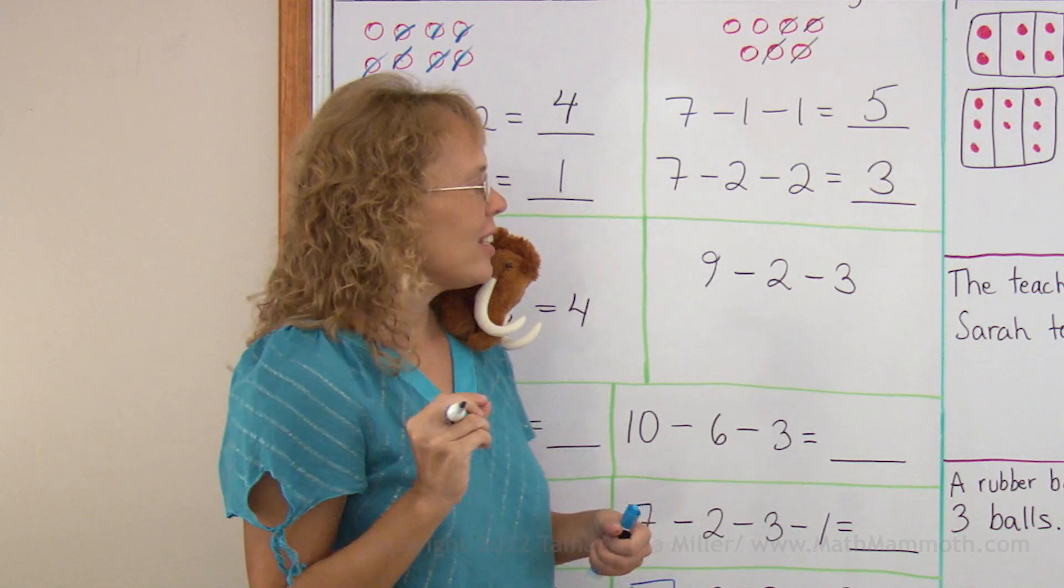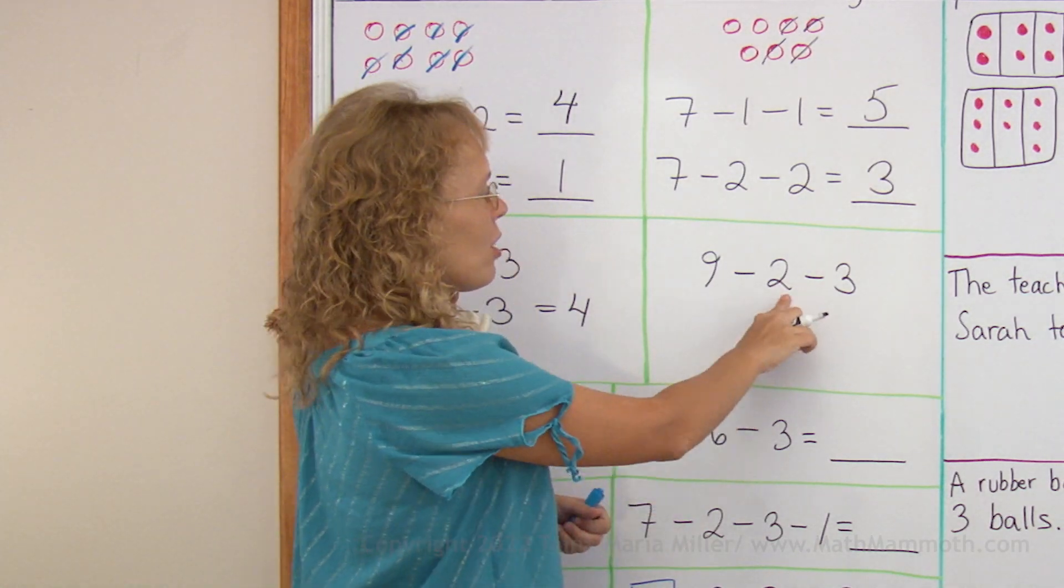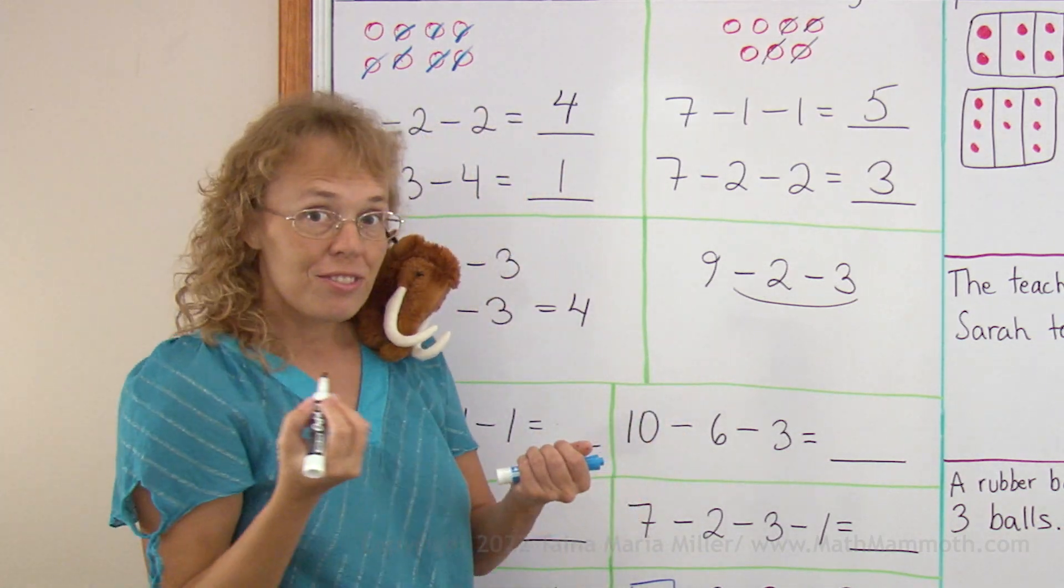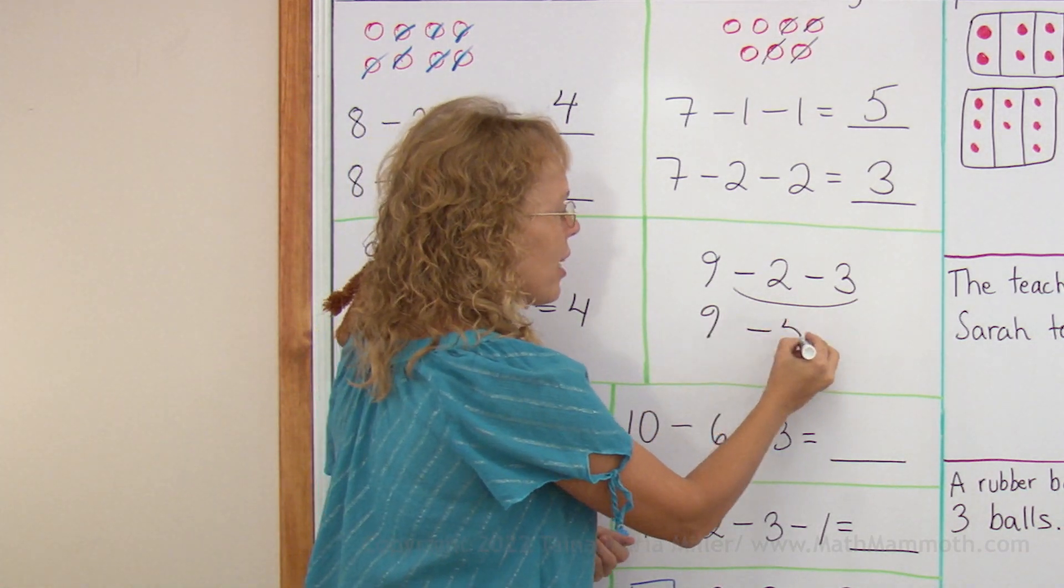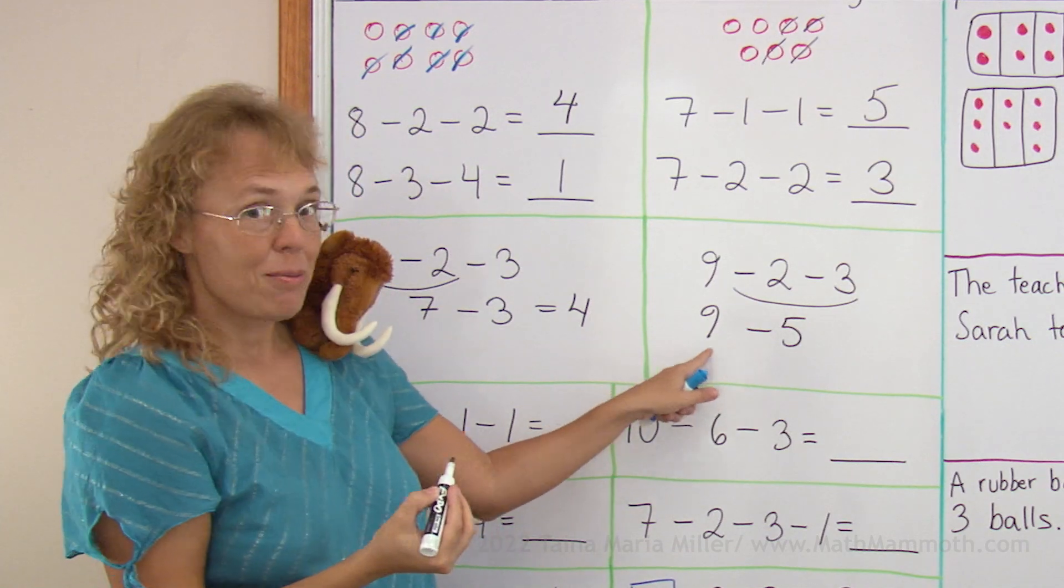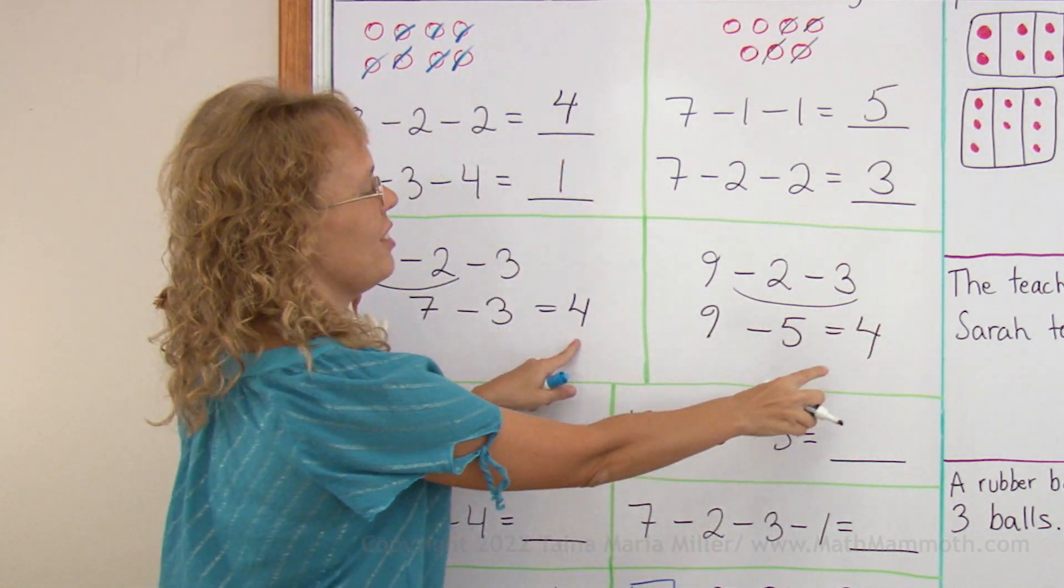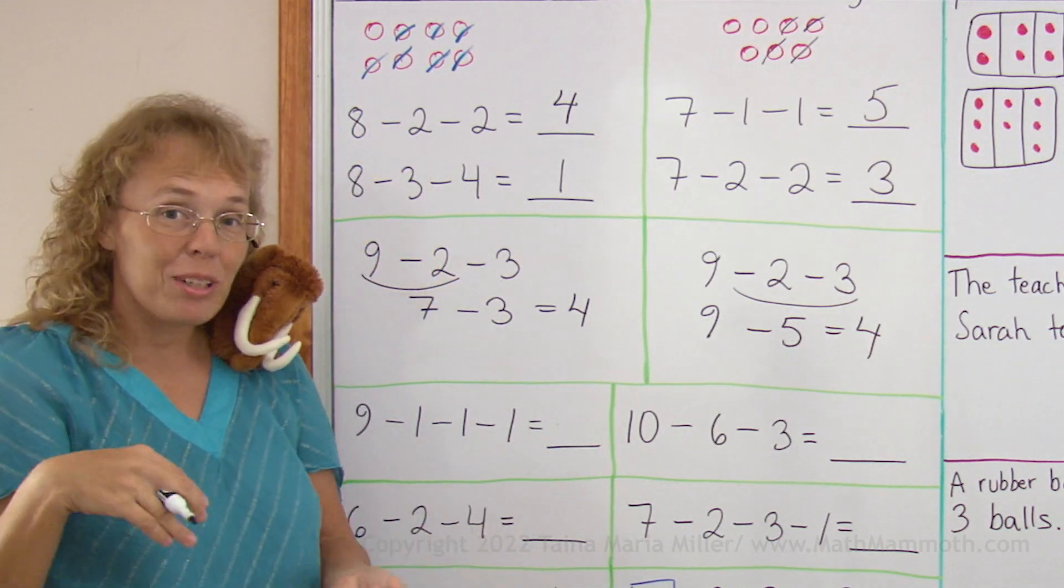And the other way of thinking is that I think 2 are gonna go away and 3 are gonna go away. So in total 5 are gonna go away, 5 are gonna get subtracted. So it is 9 minus 5 and that equals of course the same, 4. It's the same answer either way you think about it.